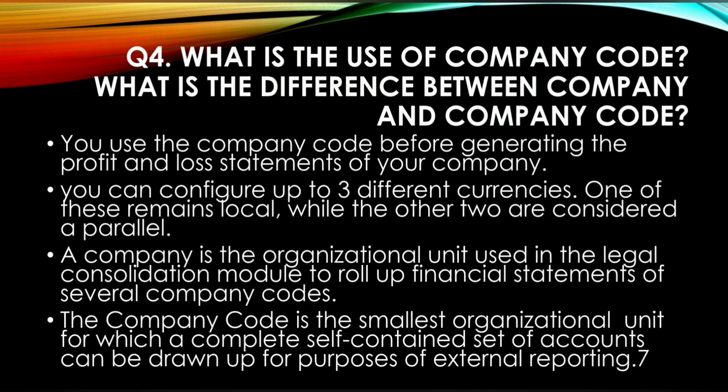The next question is: what is the use of company code, and what is the difference between company and company code? You use the company code before generating the profit and loss statement of your company. Not all employees have access to the same code. You can configure up to three different currencies — one local and two parallel. A company is the organizational unit used in the legal consolidation module to roll up financial statements of several company codes. The company code is the smallest organizational unit for which a complete self-contained set of accounts can be drawn up for external reporting.